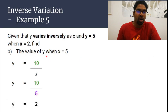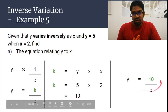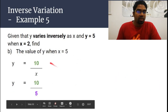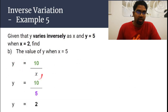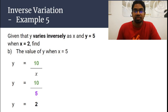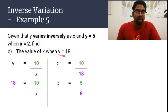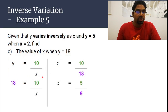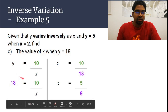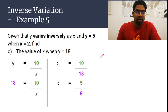Part b: find the value of y when x equals 5. Without the equation we cannot solve this. Now that we have y equals 10 over x, substitute x = 5: y equals 10 over 5, which is 2. Part c: find the value of x when y equals 18. Substitute y = 18 into y equals 10 over x, then rearrange to make x the subject: x equals 10 over 18, which simplifies to 5 over 9.